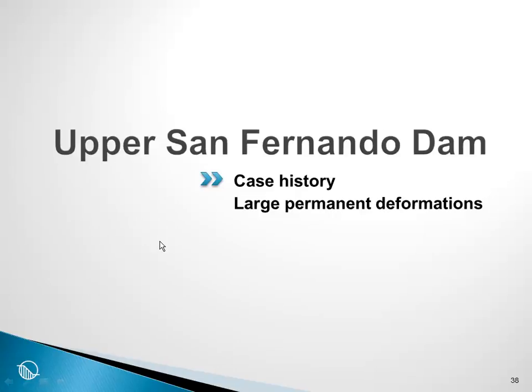There was a second dam at the San Fernando site, known as the Upper San Fernando Dam. This structure was subjected to the same earthquake as the lower dam. What is interesting about this case history is that it is one of the cases where there were large deformations, but the structure itself did not totally collapse and the reservoir was not lost or drained. It is of particular significance when we want to look at what the permanent deformation during earthquake shaking is, and whether the deformation is such that the structure will not completely collapse.